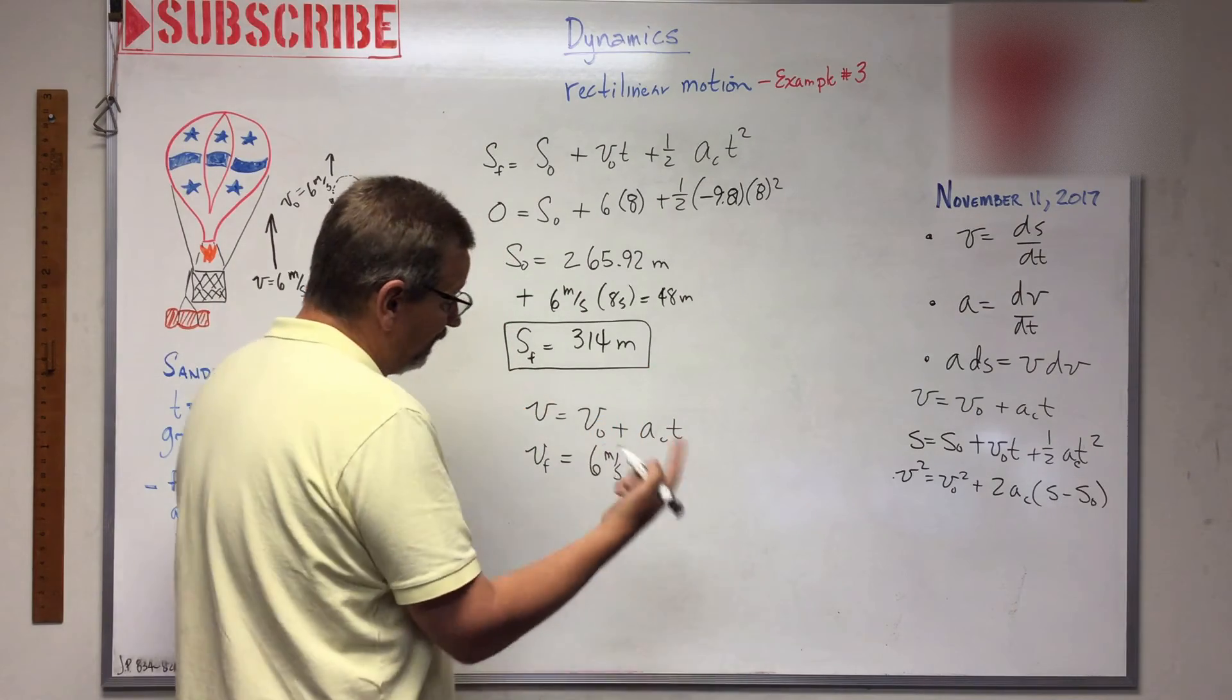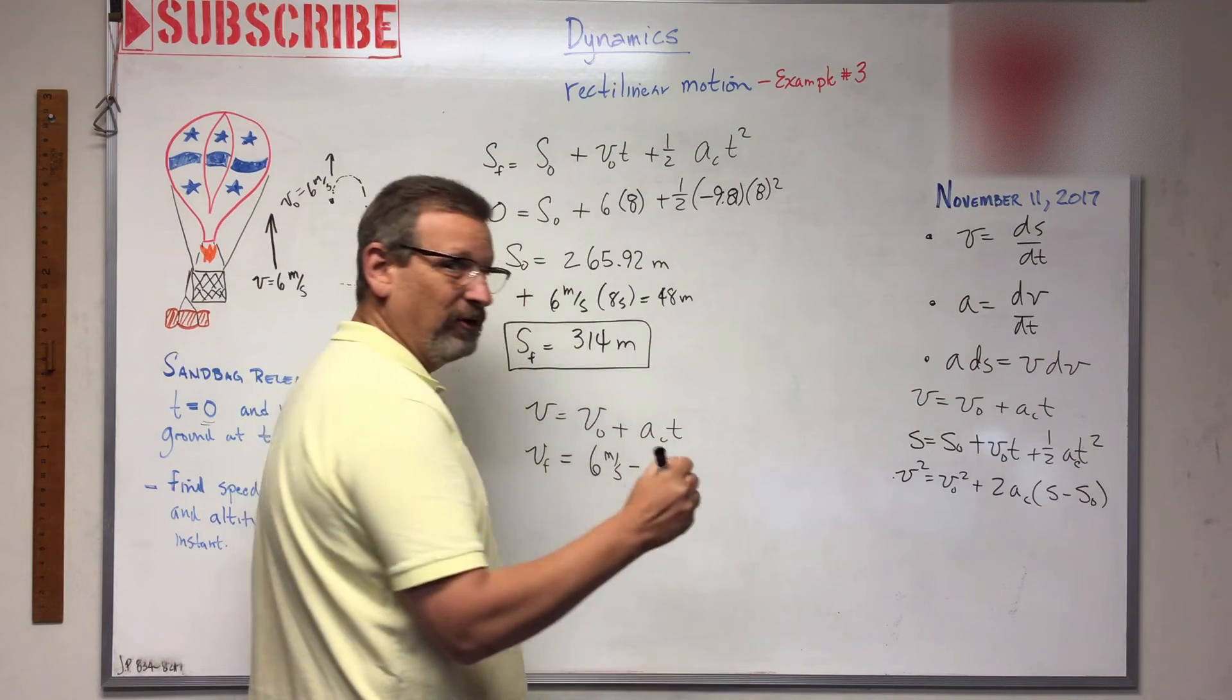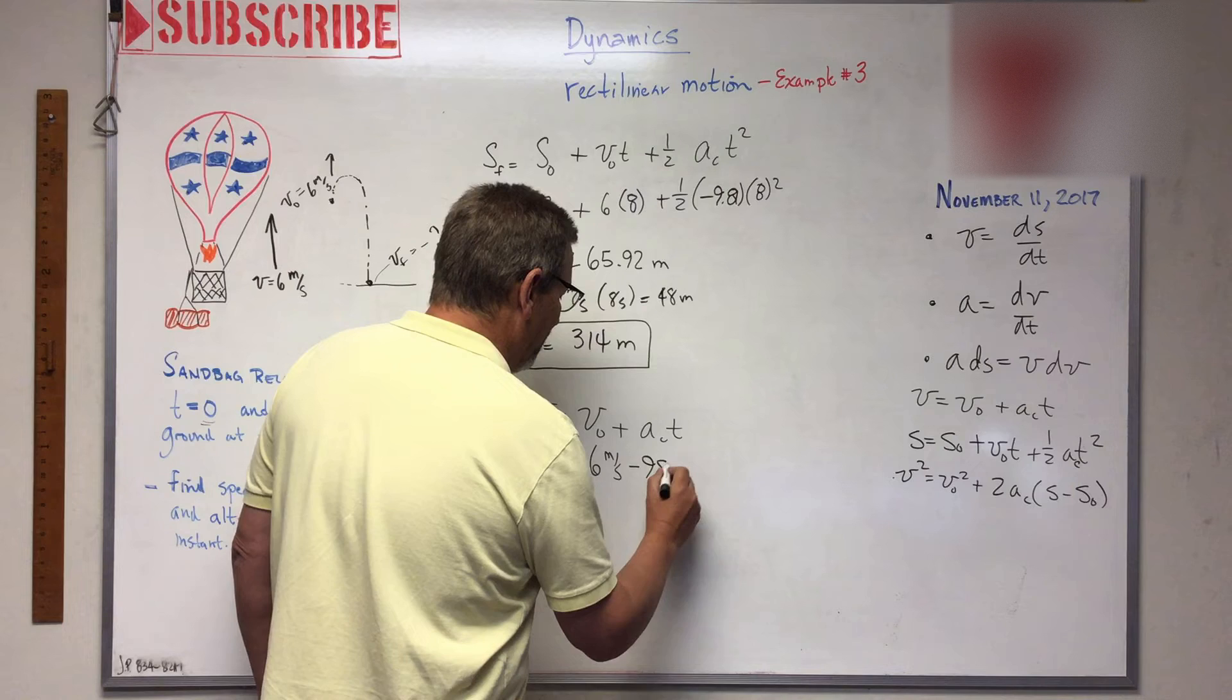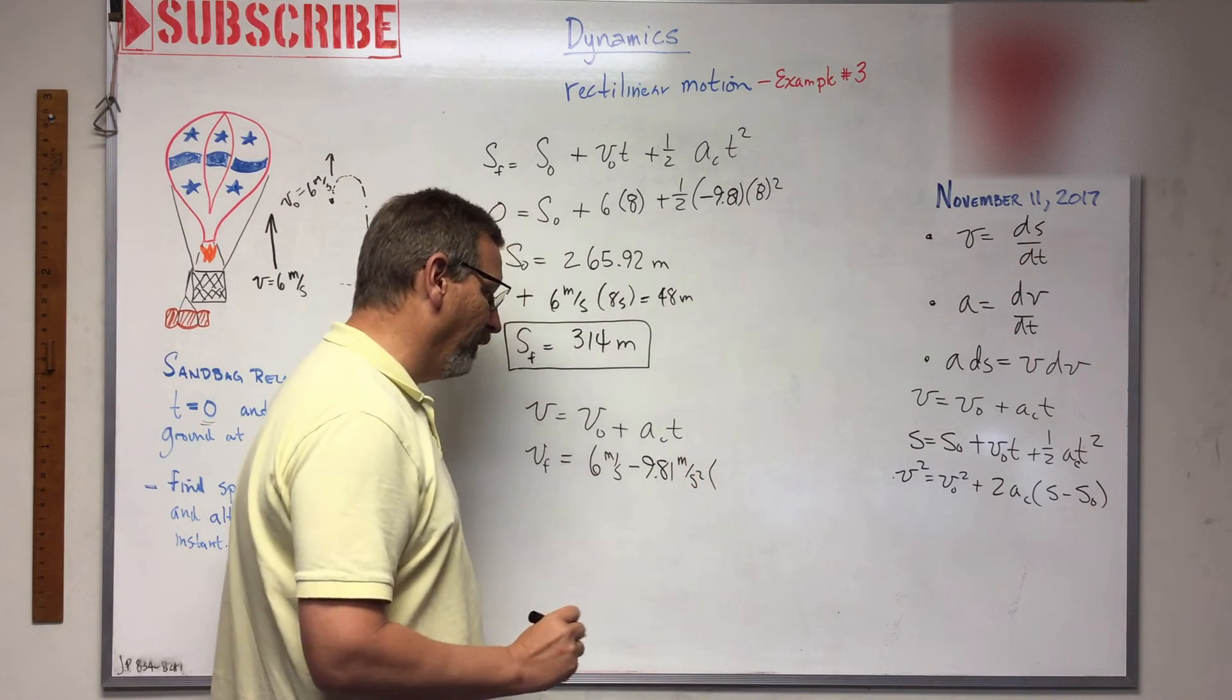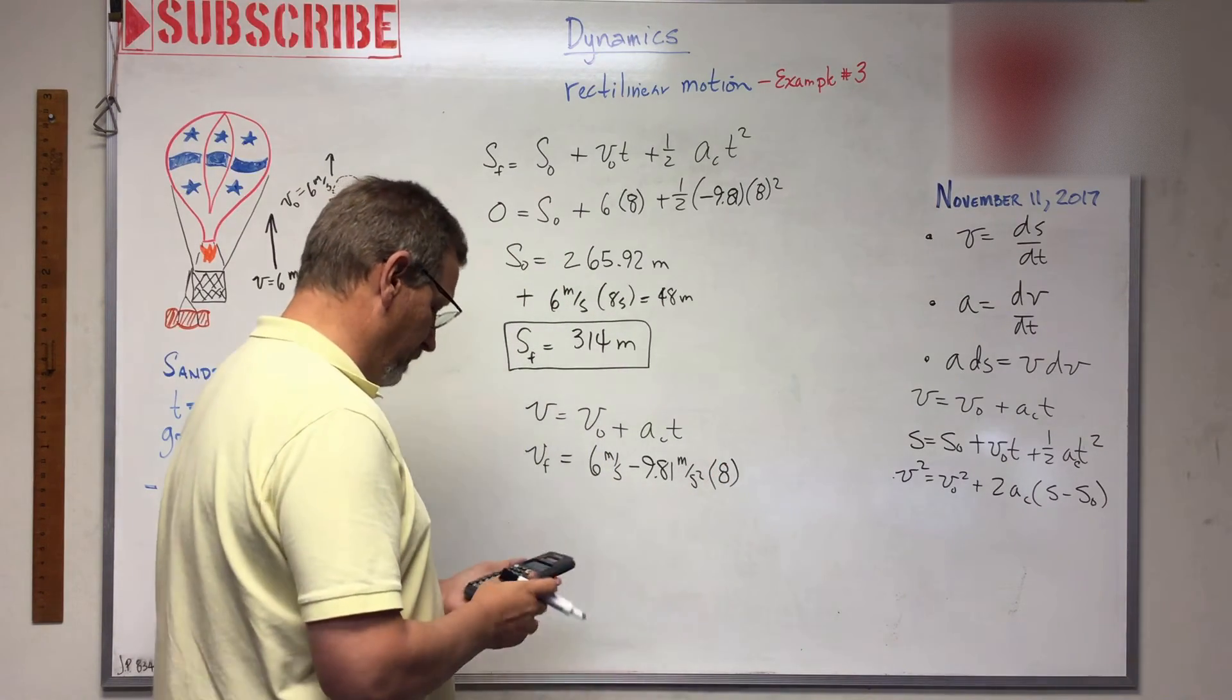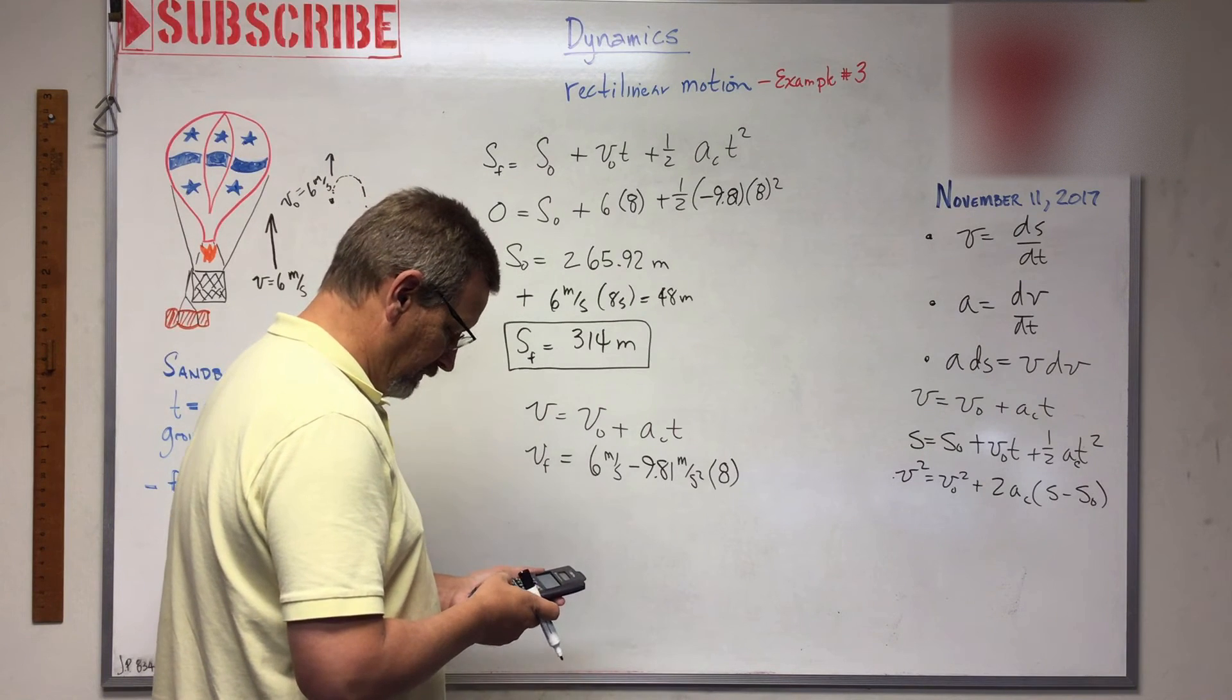And again, I'm going to call upwards positive, so I'm going to put a minus here because my acceleration due to gravity is negative 9.81 meters per second squared times t. How long did it fall for? Eight seconds. And so here we go, 9.81 times eight.